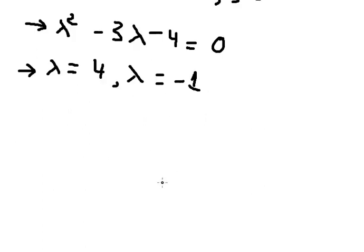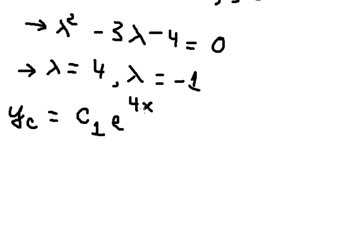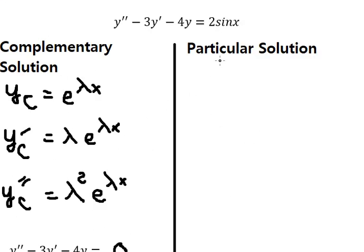So λ equals negative 1 and λ equals 4. I will put yc equals c₁ e to the power of 4x plus c₂ e to the power of negative x. We substitute λ = 4 and λ = -1. Now for the particular solution we need to use yp.